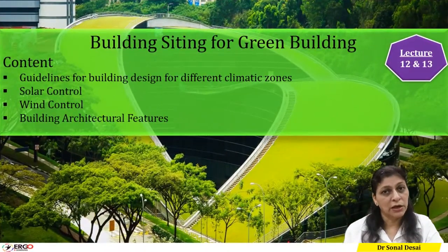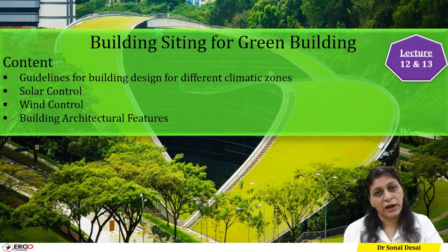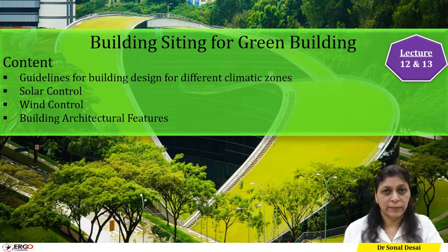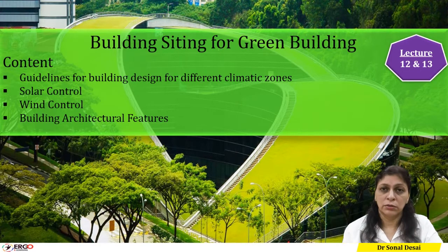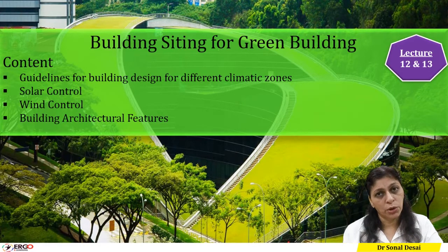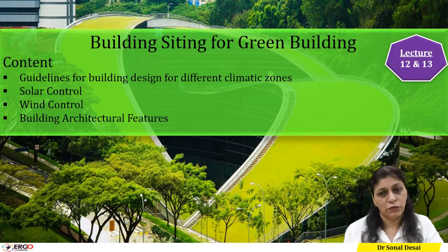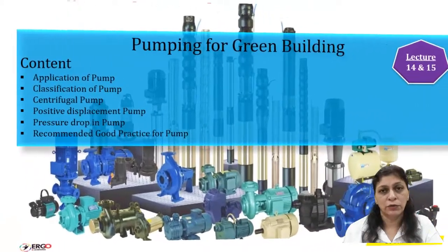Green building orientation has a very important effect. How to orient the building so that there is minimum heat gain or minimum wind load on the building is discussed at length. What advantage of shelter or shading should be taken so that there is minimum load on HVAC is also covered. What is an atrium, what is a vertical core, and how they need to be designed is also discussed in the siting of green buildings.